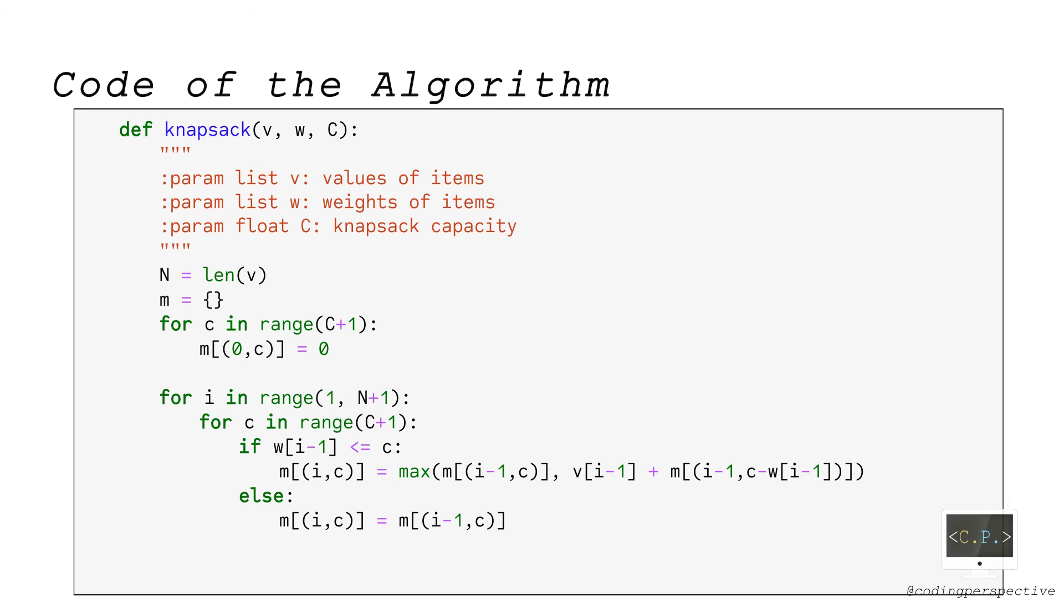We update the value function m(i,c) in this nested loop. Lastly, we return m(N,C), the maximum value obtained with capital C as an output.